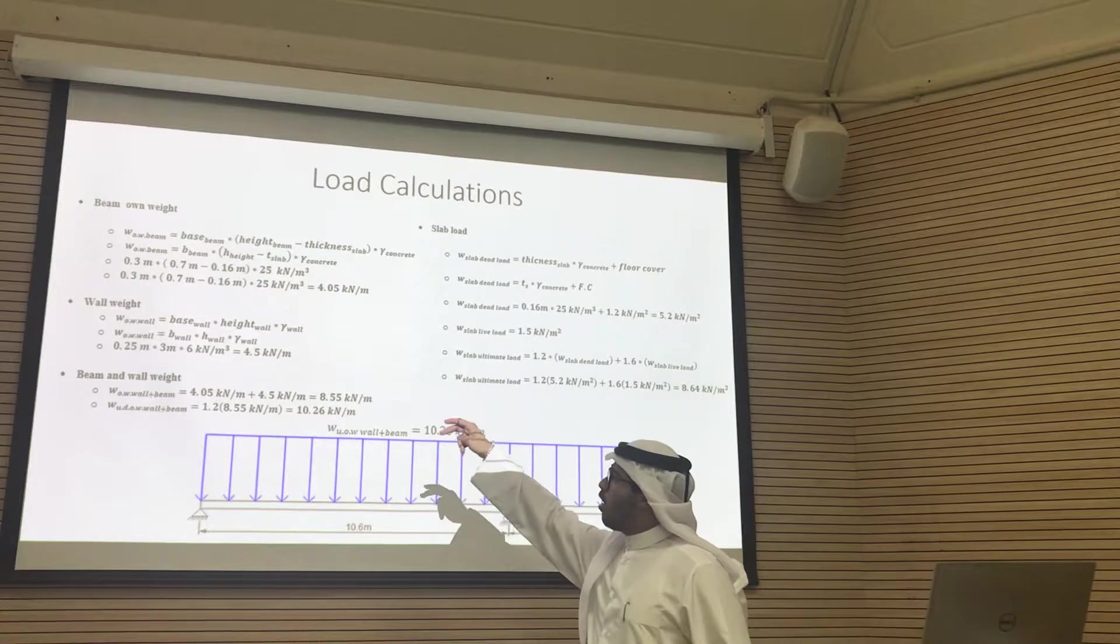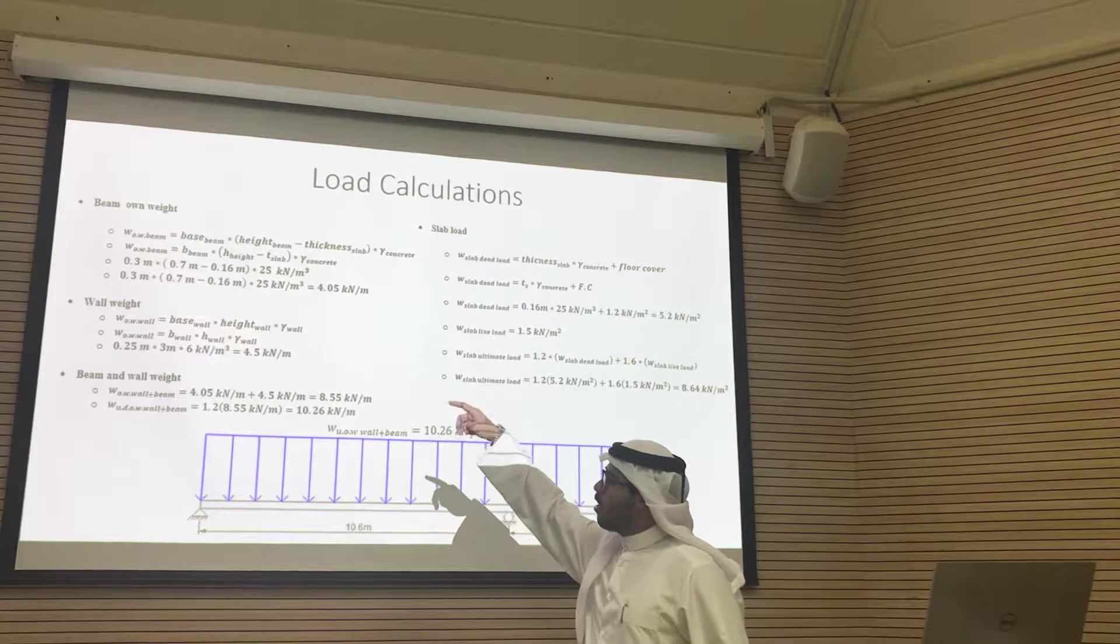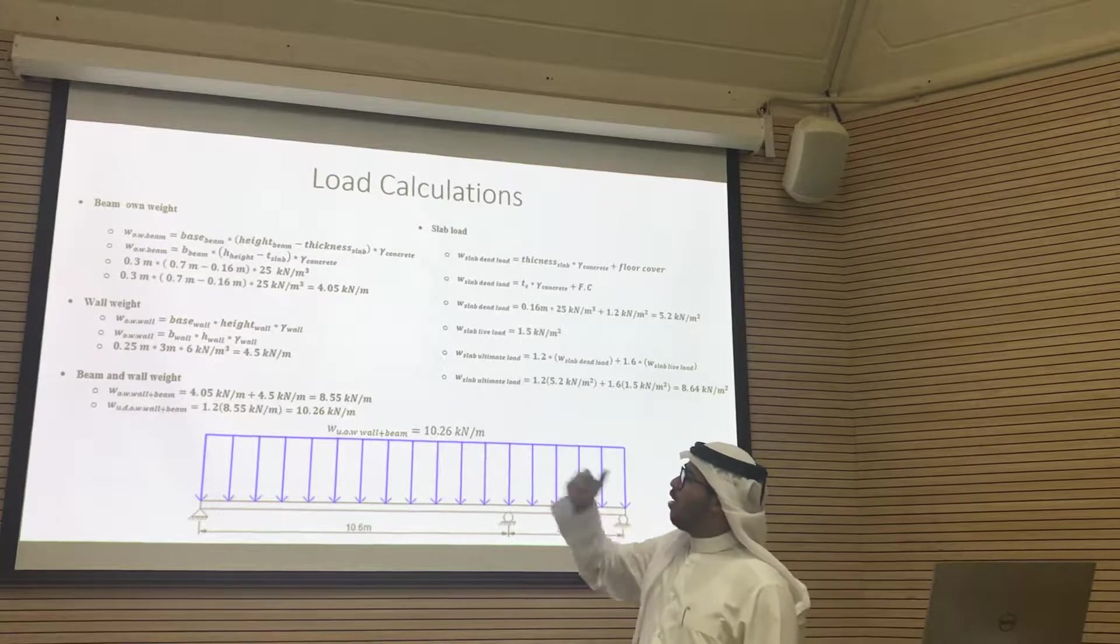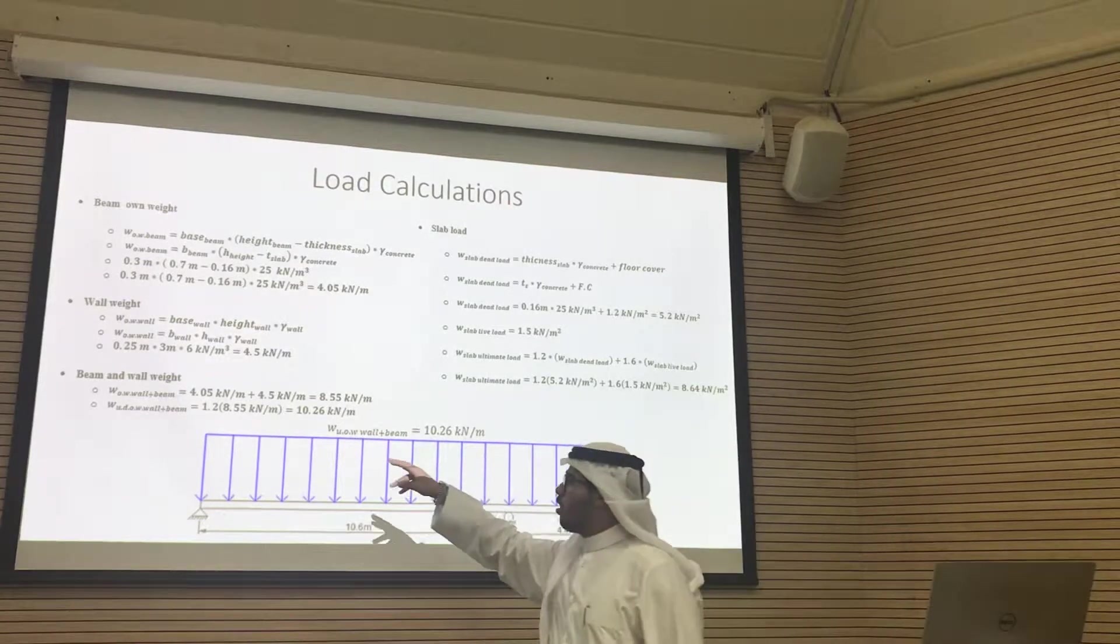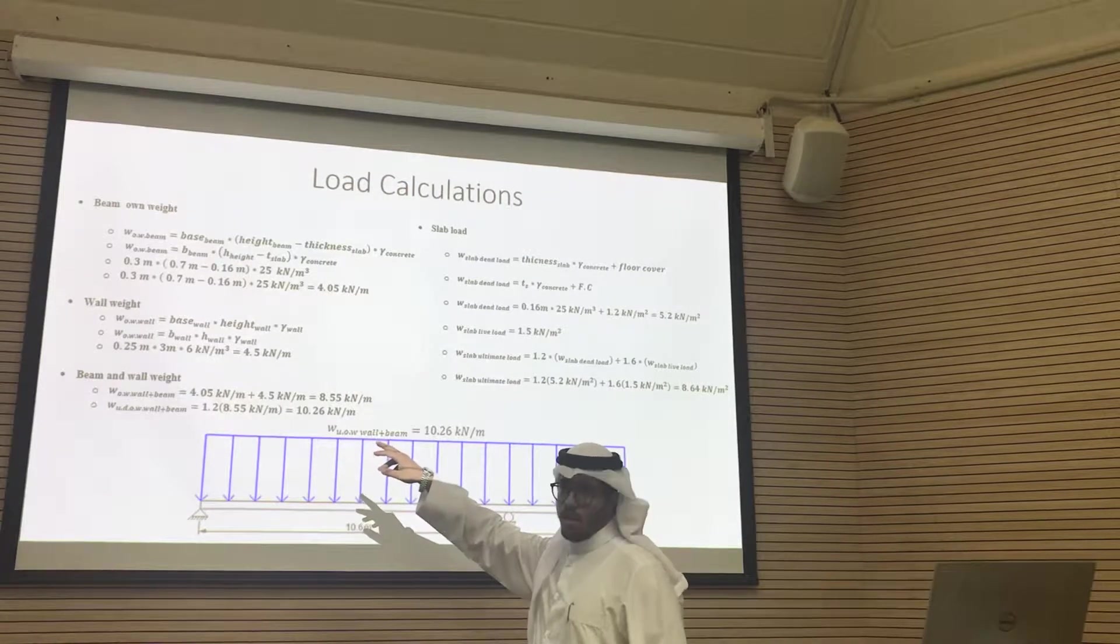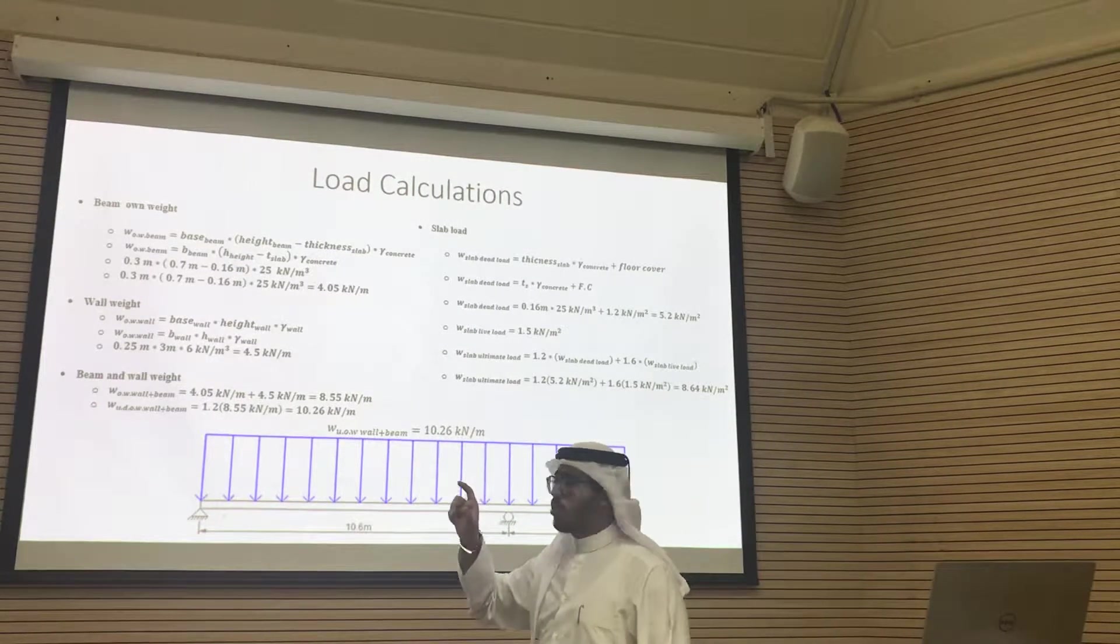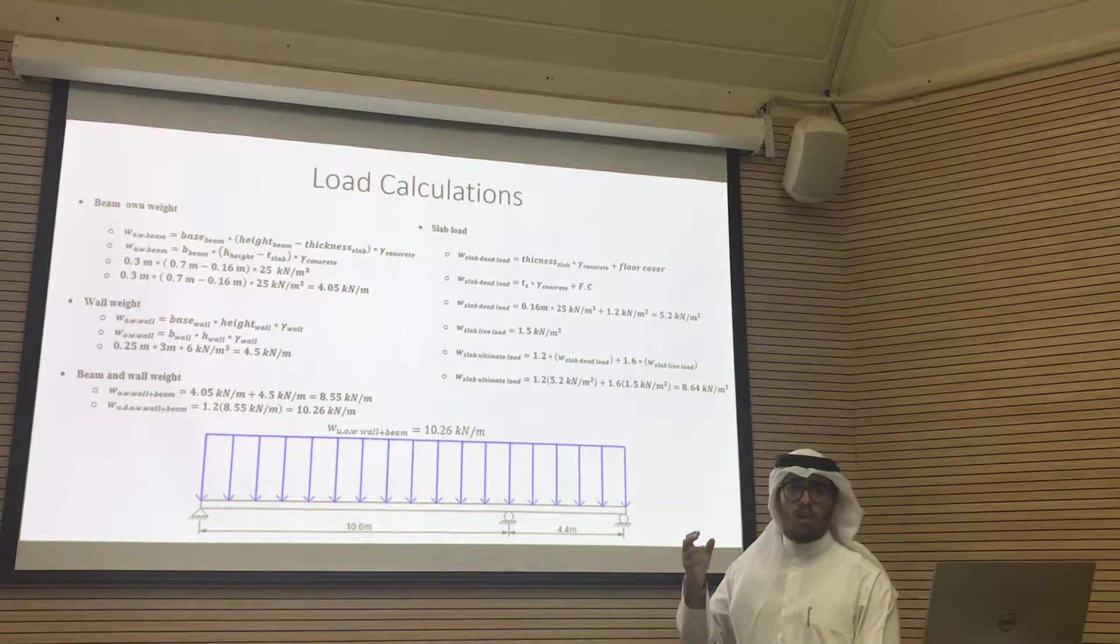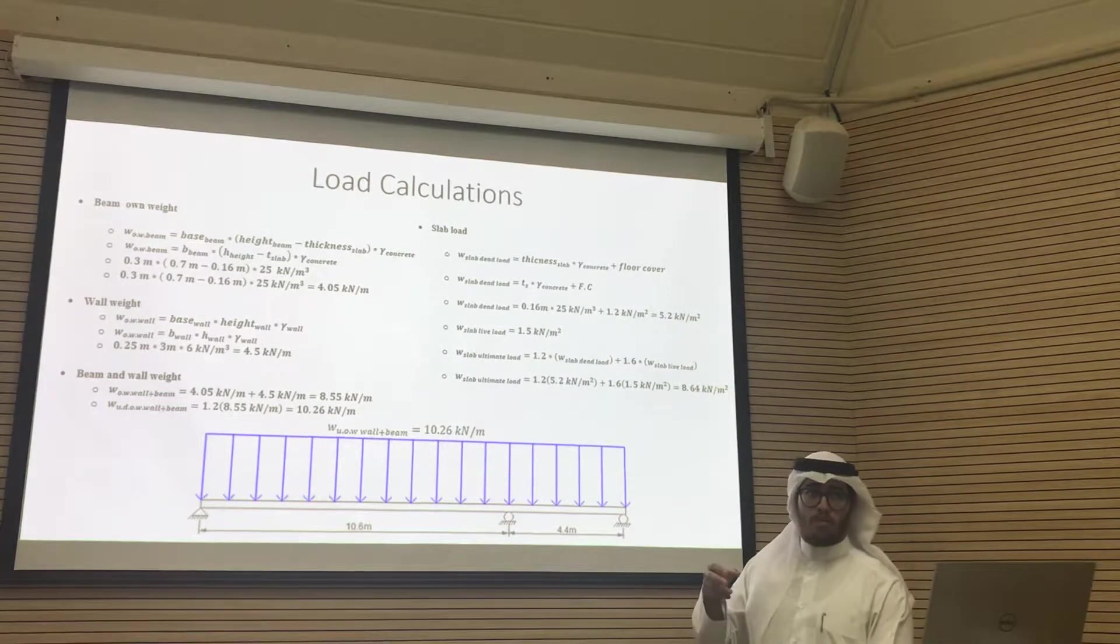Then we should add them together. Finally, we should multiply them by the factor which is 1.2. Then we should find the slab load, the load that comes from the slab in the building.